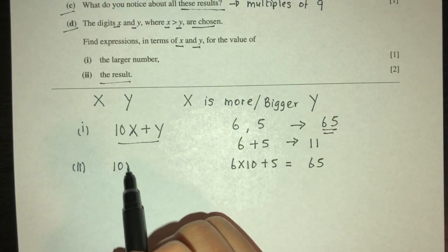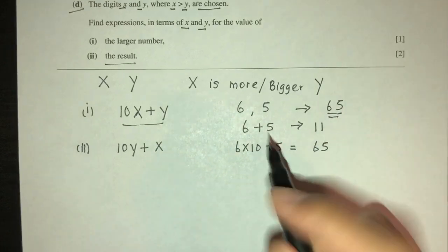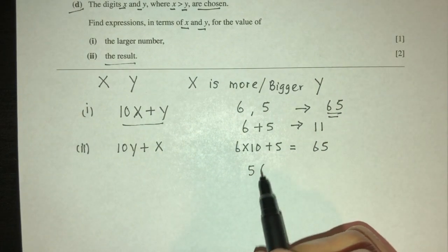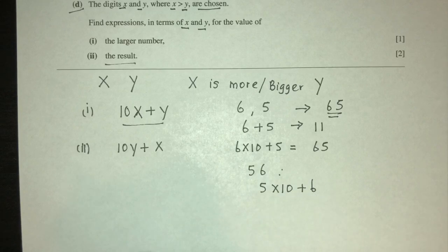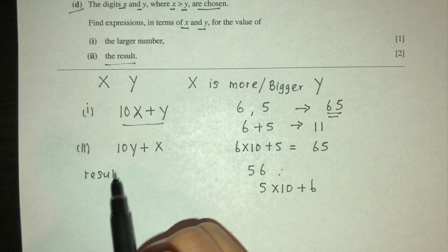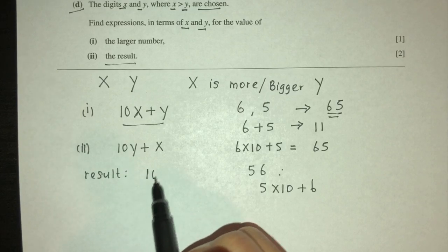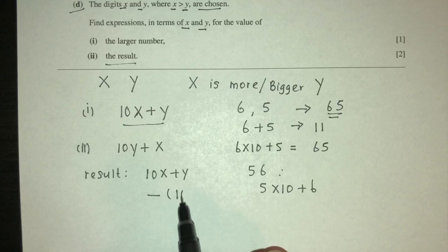Same way, if you want to find 56, you have to do the first one is 5 times 10 plus 6. Same way. Now the result is the larger number minus the smaller number, so the larger is the first one minus the smaller number.